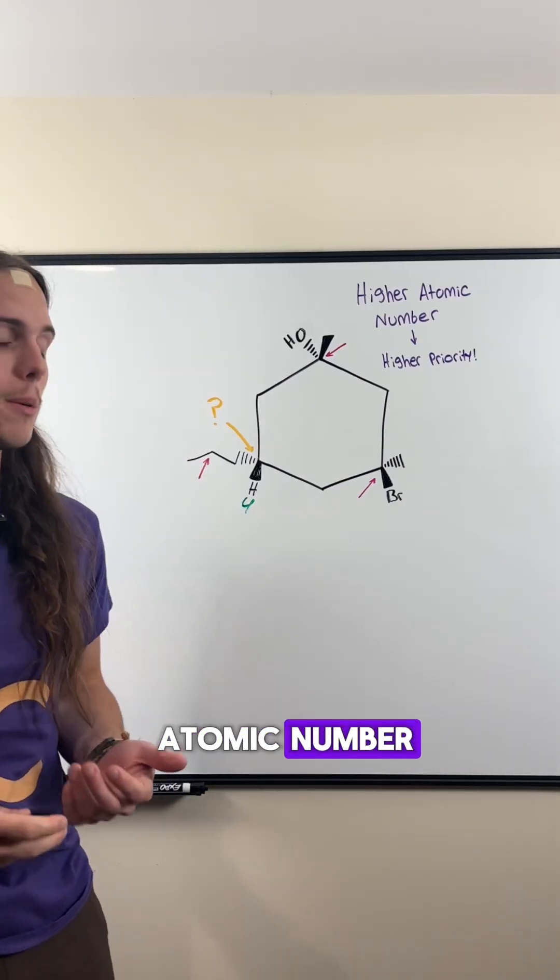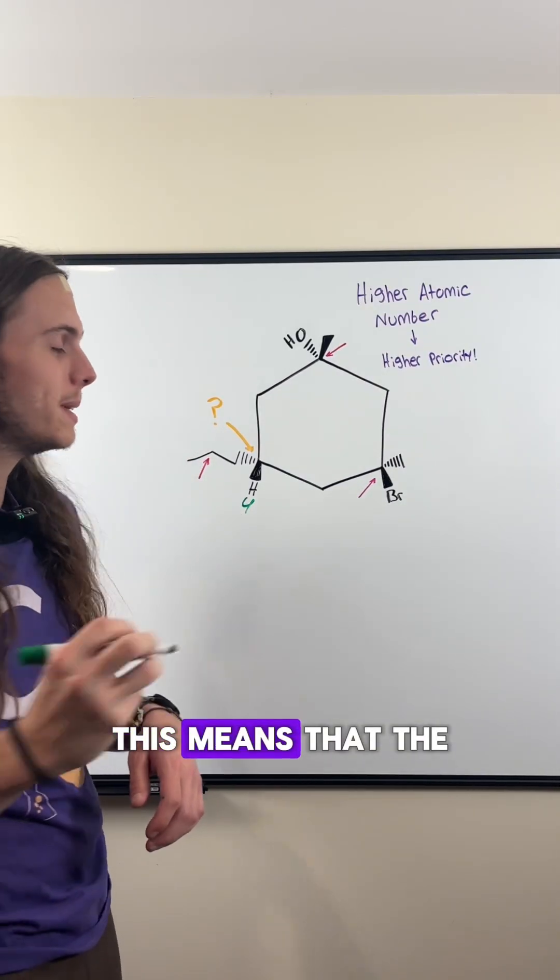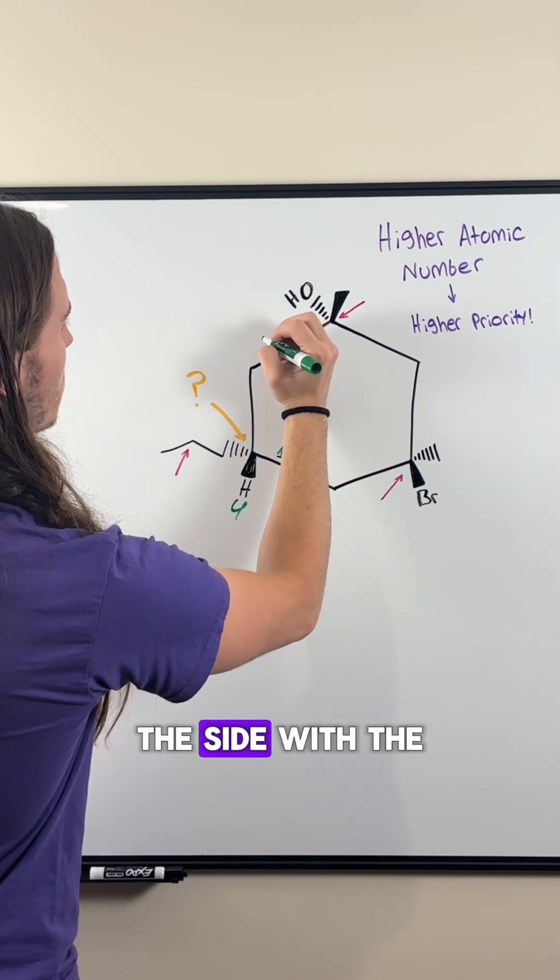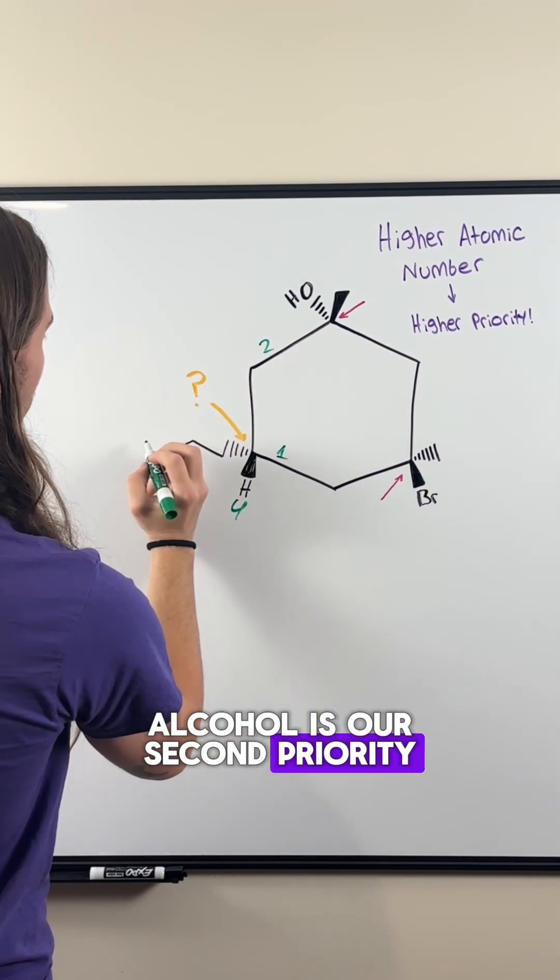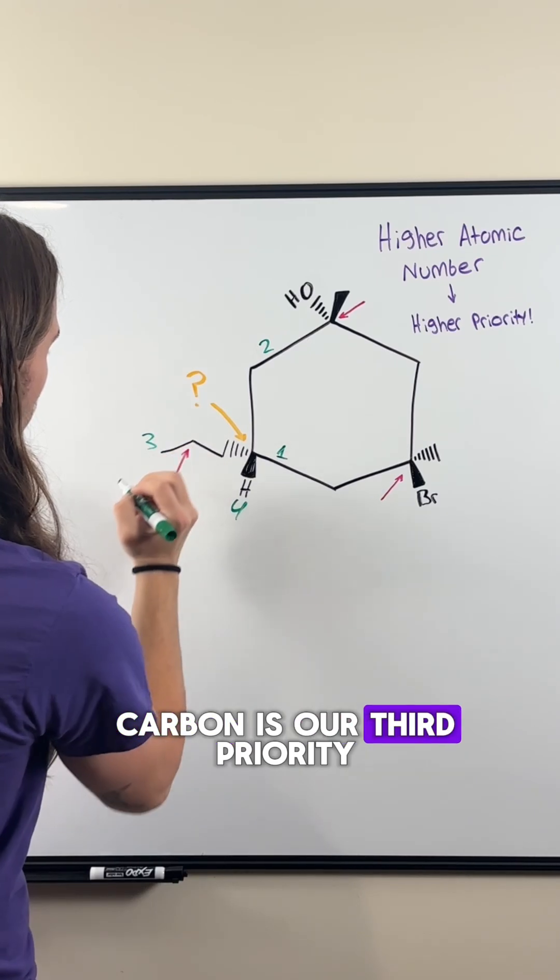Remember, the higher the atomic number, the higher the priority. This means that the side with the bromine is our first priority, the side with the alcohol is our second priority, and the side with the carbon is our third priority.